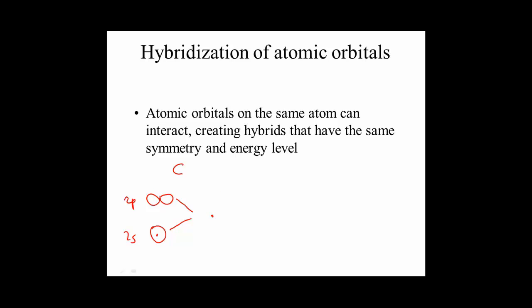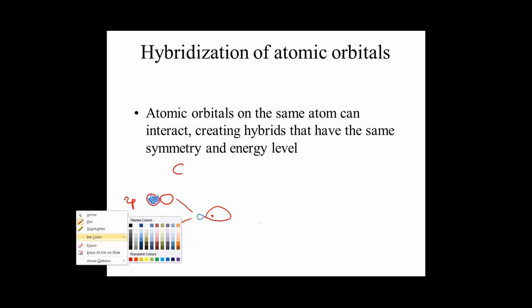If we take this p and add it to this s, on this side we'll have positive overlap, on this side we'll have negative overlap, so we end up with an orbital that would look like this. And we add it one way, and then if we subtract it, again doing linear combinations, we end up with this orbital here.